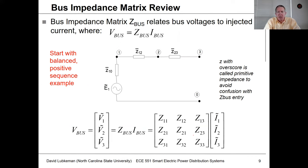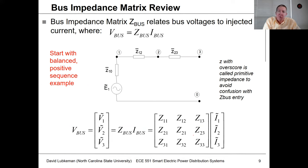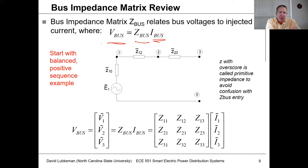To understand fault analysis, you need to understand how a bus impedance matrix works, because that's the key information we use. A bus impedance matrix — which you can think of as the inverse of a Y-bus or admittance matrix — relates injected currents at each bus to voltage. The relationship is: V_bus = Z_bus × I_bus, where all three are matrices.